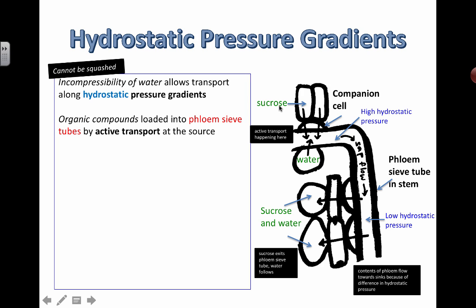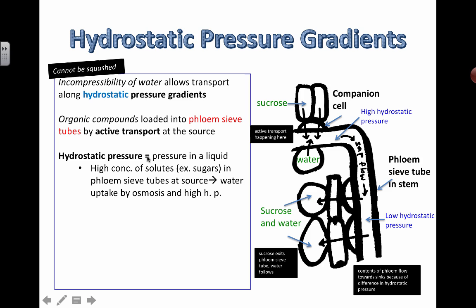So this area ends up having a very high hydrostatic pressure. One more time: organic compounds, for example sucrose, are loaded into this phloem sieve tube by active transport - ATP is required to pump the sucrose in. Once this area becomes more sugary or salty, water is going to follow in that direction because water moves to saltier areas - from an area of low solute concentration to an area of high solute concentration. Therefore lots of water goes in, creating high hydrostatic pressure. Hydrostatic pressure is the pressure in a liquid.